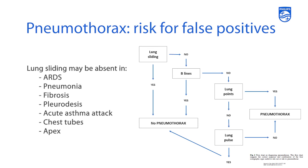You then have to ask yourself: does the patient have B-lines? If they do have B-lines, they likely do not have a pneumothorax. Does the patient have a lung point? If they do have a lung point, they likely do have a pneumothorax. If they do not have a lung point, ask: is there a lung pulse? If there is a lung pulse, they likely do not have a pneumothorax. If there is not a lung pulse, they likely do have a pneumothorax. You work down this algorithm when you have suspicion for a pneumothorax.